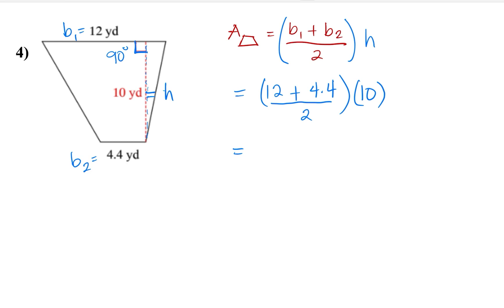So multiplying or adding 12 plus 4.4 and divided by 2, this will give us around 8.2, and then we multiply that with the height which is 10. The area of the trapezoid is going to be 82 yard square.